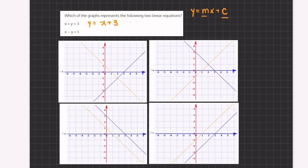Now, our slope will be negative 1 and our y-intercept will be 3. Now, let's take a look at our second equation.